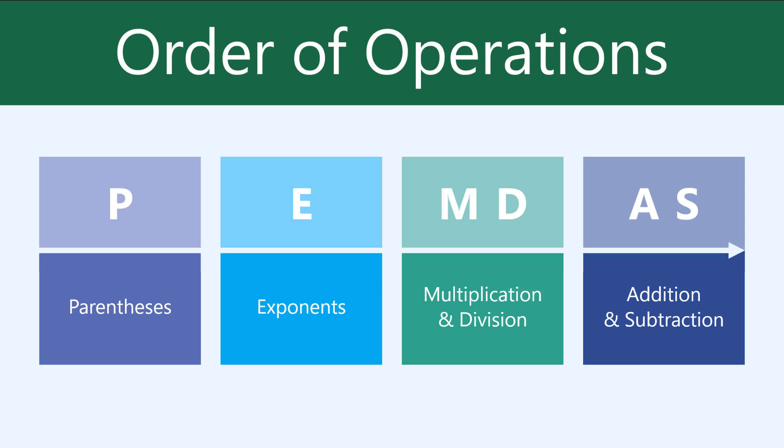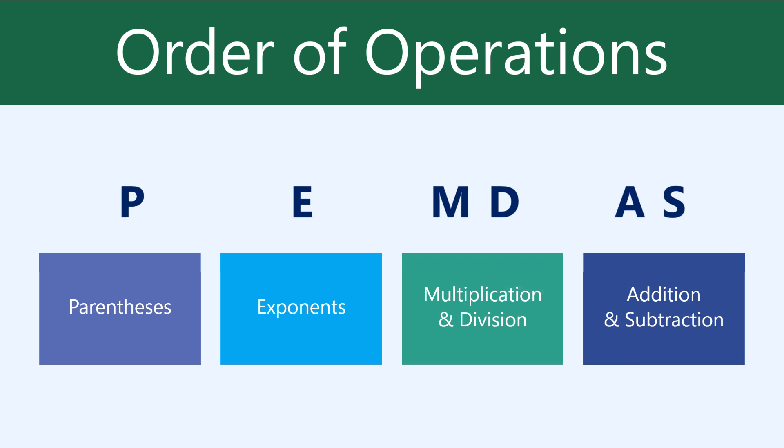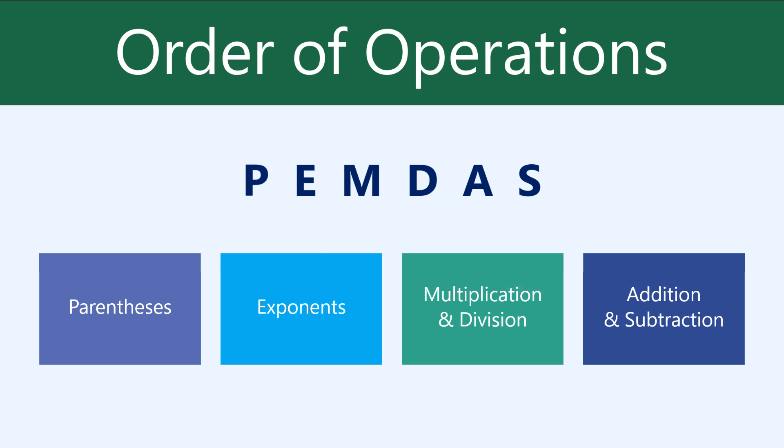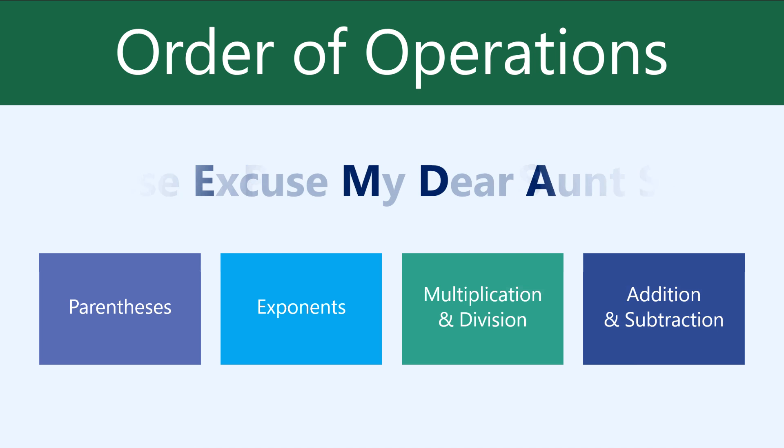Your spreadsheet knows how to use the order of operations whenever it calculates a complex formula. It's important that you remember it, so you can create formulas that'll give you the correct answer. To remember the order, you can just use the acronym PEMDAS, or remember the phrase: Please Excuse My Dear Aunt Sally.